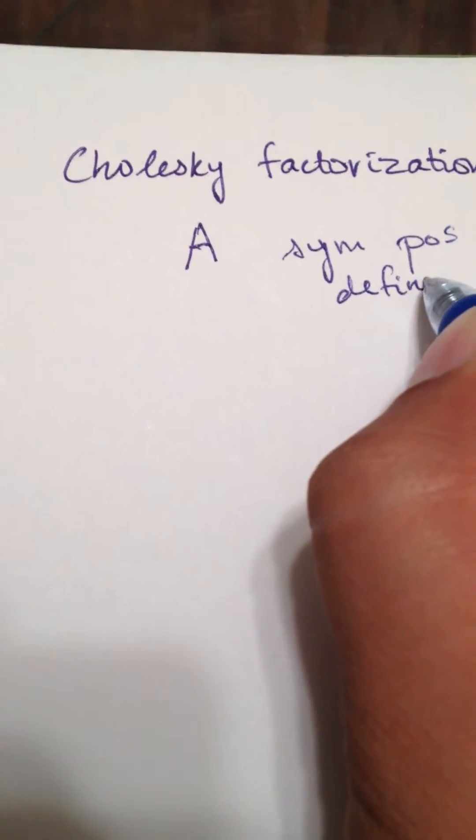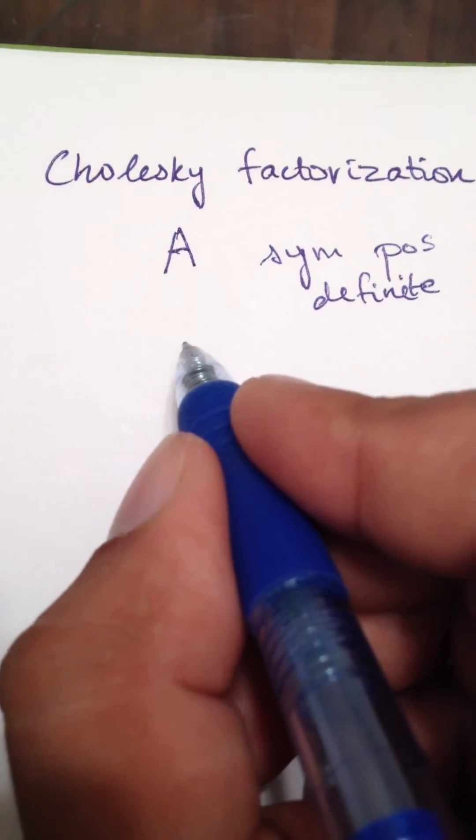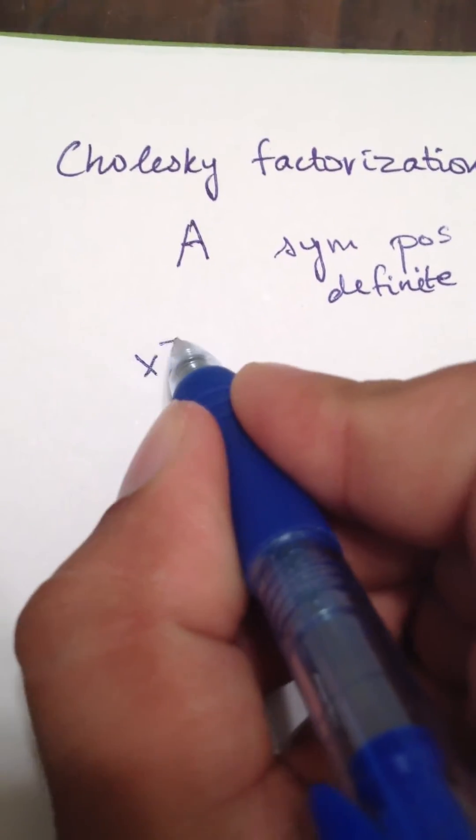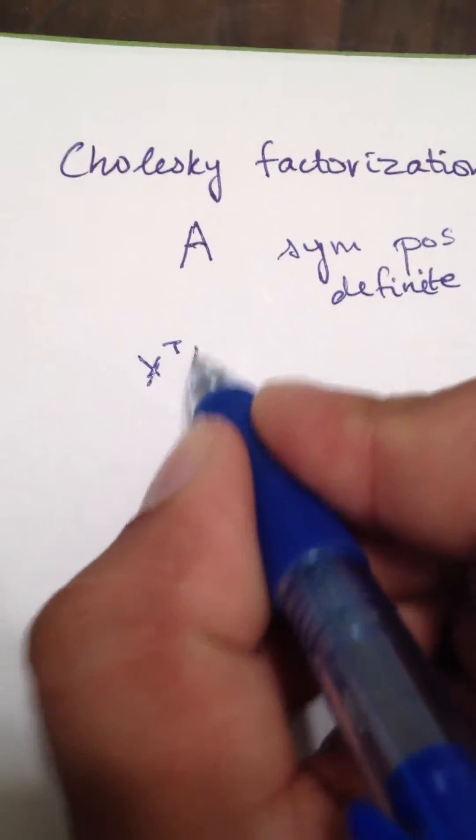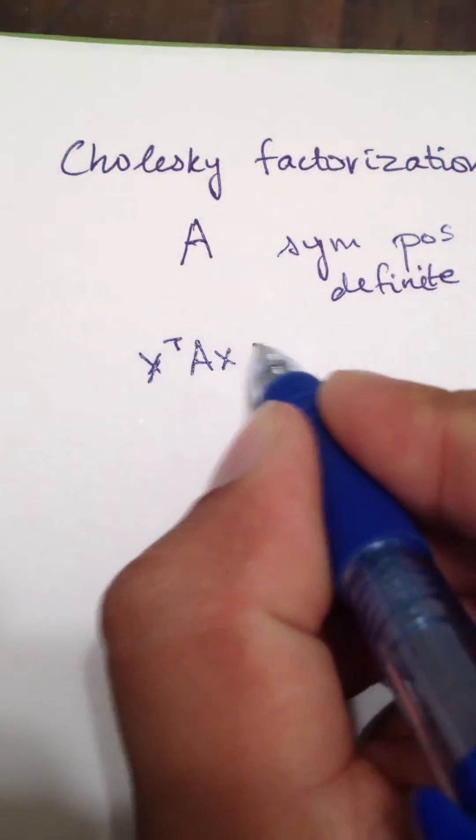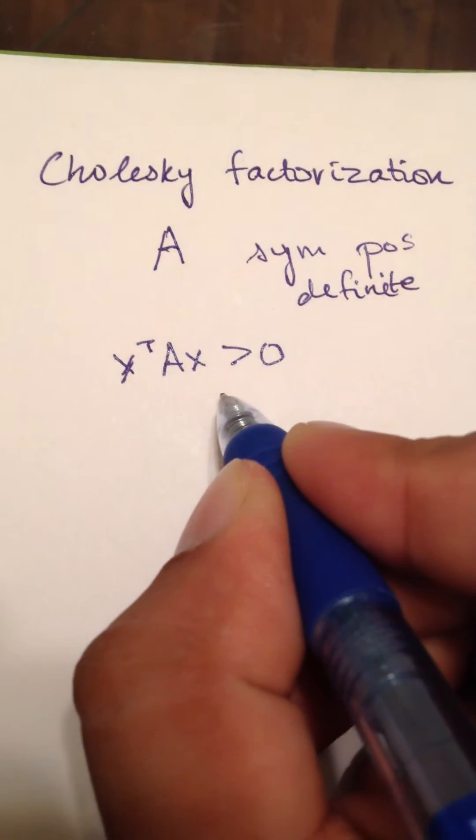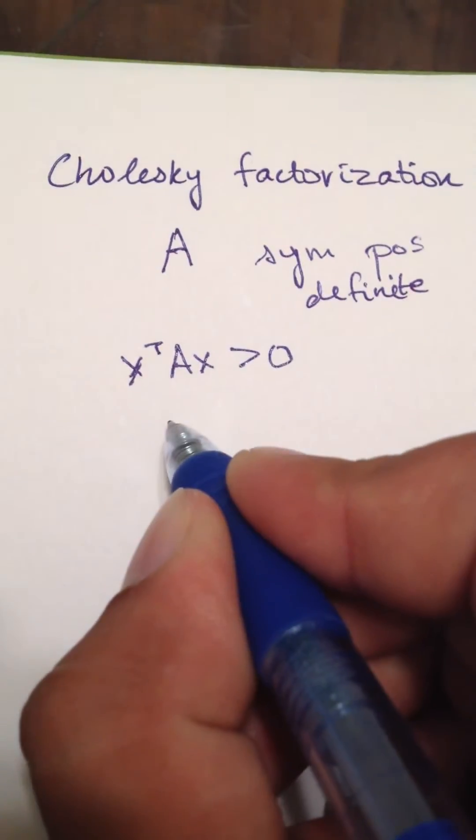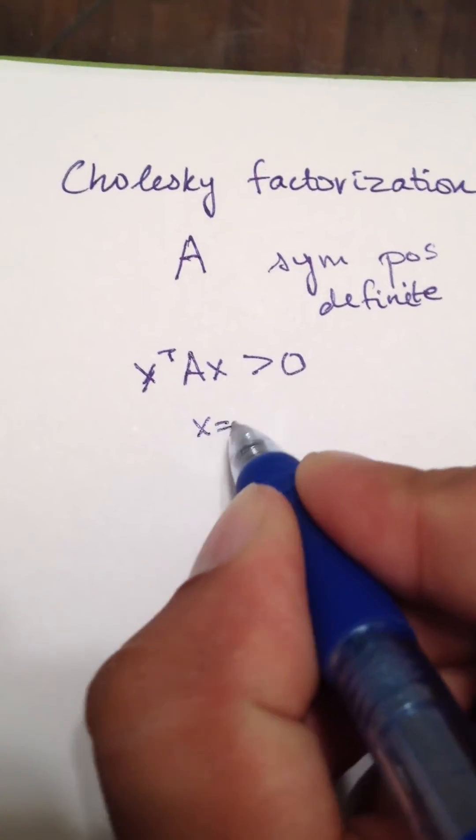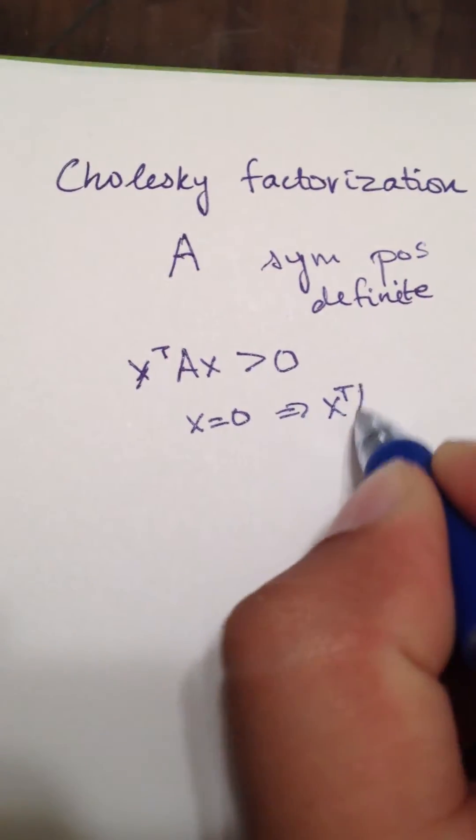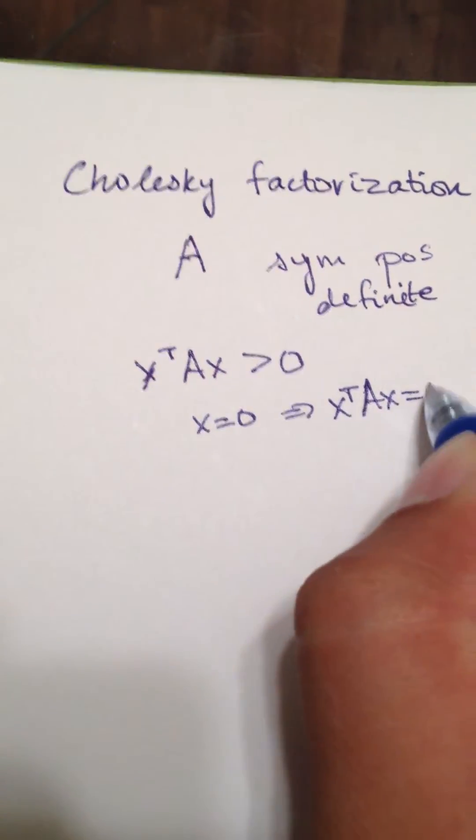So, what does it mean to be positive symmetric definite? Well, you can watch my video on symmetric positive definite, or I'll just tell you here. Basically, it means that for any vector x, x transpose A x has to be greater than 0 for all values except when x is 0, it will be equal to 0. For all other values, it should be positive.